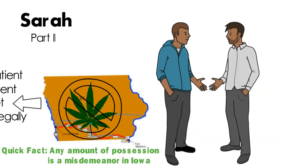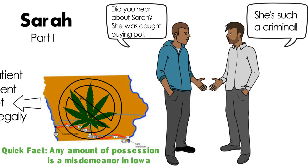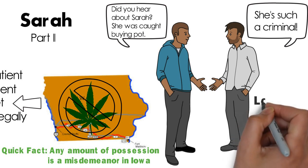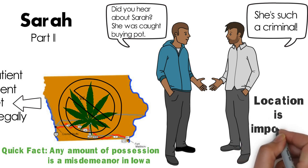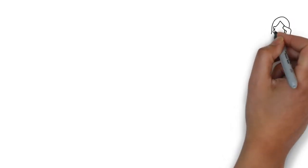Why? In Iowa, it is illegal to grow, distribute, or consume in any way. In Colorado, marijuana is legal, doctor-approved, and there are socially acceptable places to purchase marijuana, so Sarah isn't likely to be labeled as deviant. The only real difference is location, but society's reaction to her behavior is very different. It's the same person buying the same substance, but in different locations.